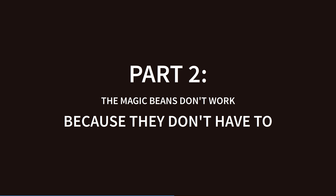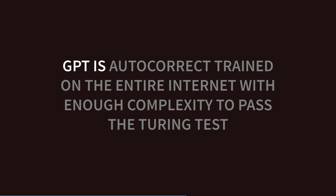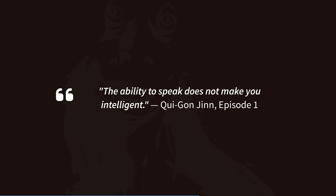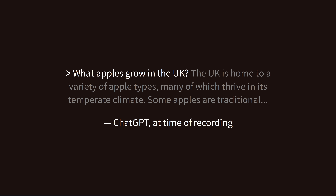Part 2: The magic beans don't work because they don't have to. GPT is a marvel of natural language processing. Autocorrect trained on the whole internet can almost always offer sensible suggestions about what should come next in a sentence. But language ability — as we learned in Star Wars — does not equal intelligence. The problem is that we are extremely language-centric creatures, and we mistake language proficiency for intelligence, which causes us to misuse this technology — or for this technology to misuse us.